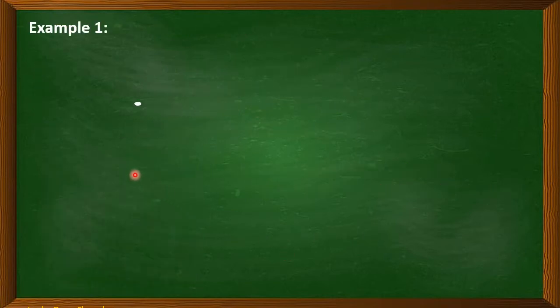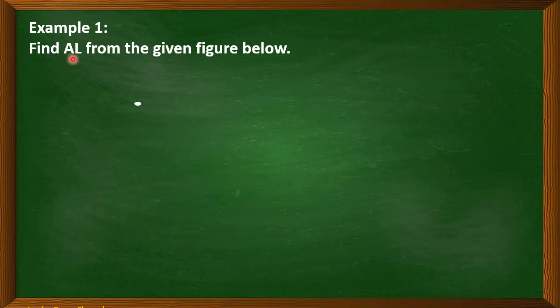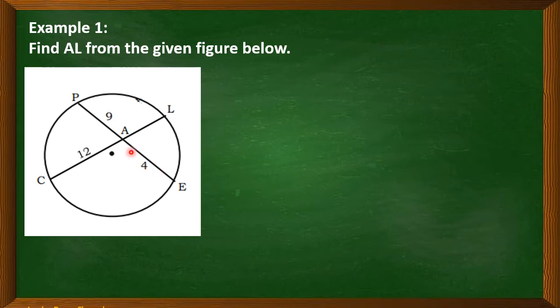Now let's have an example number one as an application for theorem on intersecting chords. Find AL from the given figure below. So from the theorem, we can have CA times AL is equal to PA times AE. Now, by substitution, we have to substitute the value of each segment.